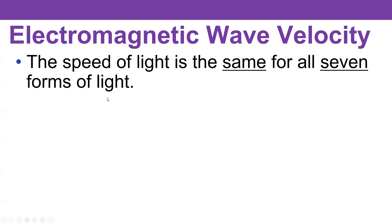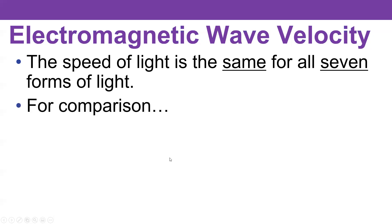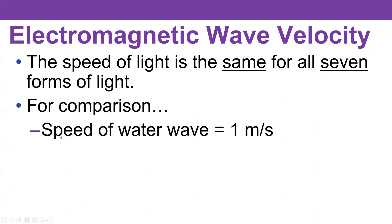And up to this point, you may not have known that there are seven different forms of light. We're going to learn about those when we talk about the electromagnetic spectrum. So if we want to compare light waves to other kinds of waves, we can do so by looking at a water wave.